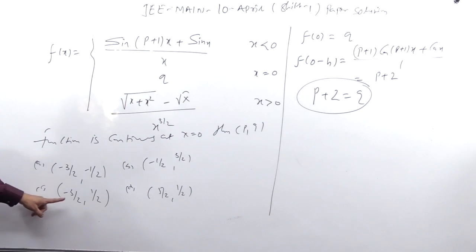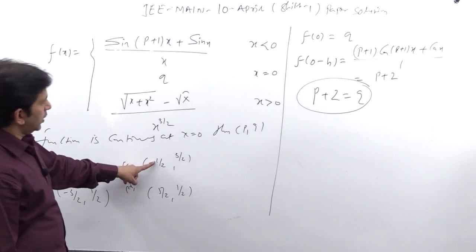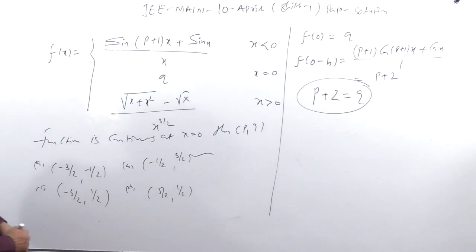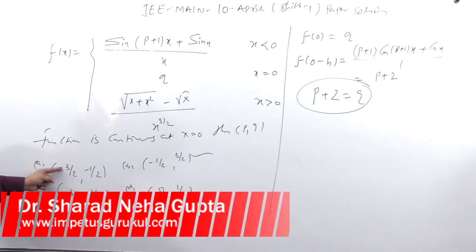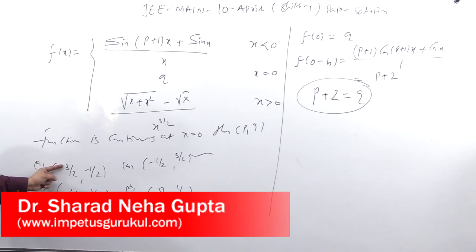P minus 1 by 2, so P equal to minus 3 by 2, then Q equal to 3 by 2. Is that P equal to minus 3 by 2, Q equal to 3 by 2? Or P equal to minus 3 by 2, Q equal to 1 by 2?